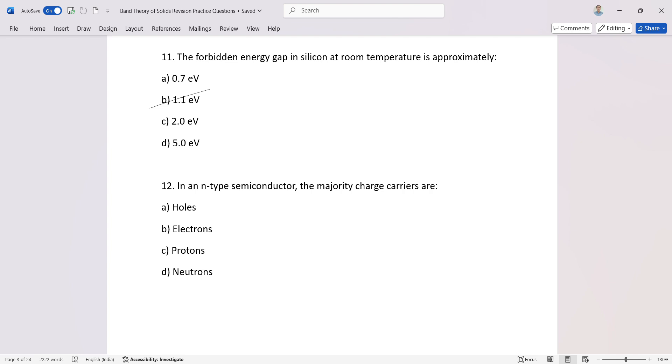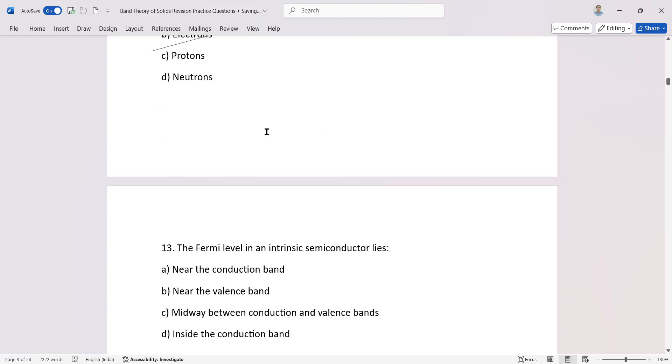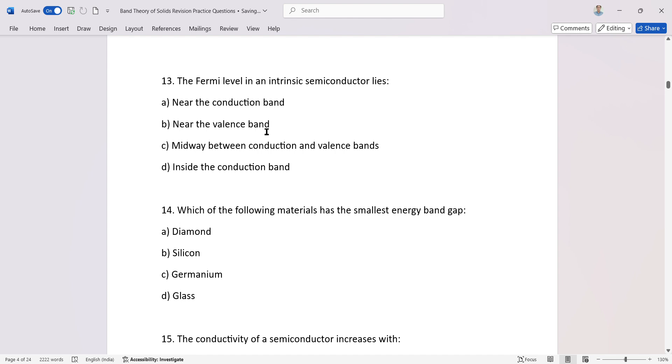N means negative, which means electrons. The Fermi level in an intrinsic semiconductor lies midway between the conduction and valence bands. Which of the following materials has the smallest energy band gap? Germanium has the smallest band gap among common semiconductors.